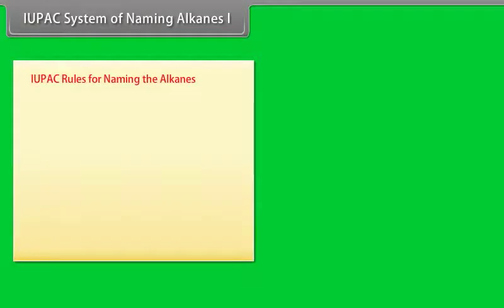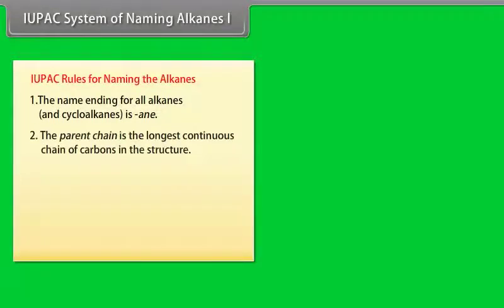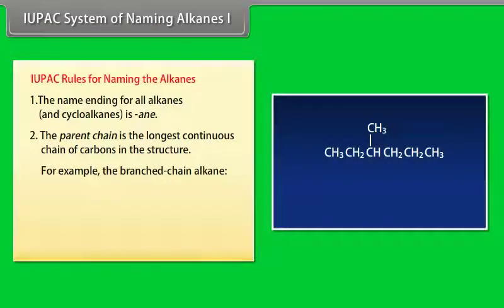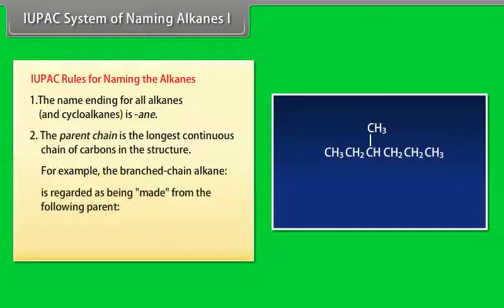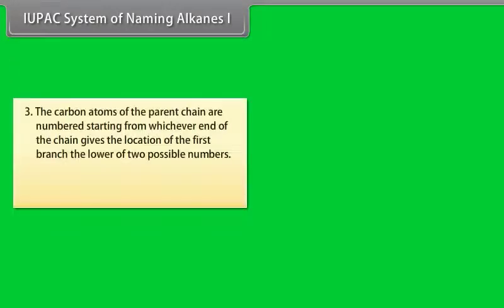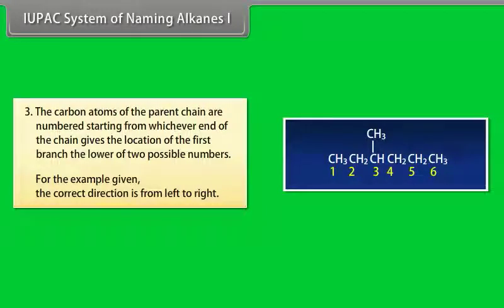IUPAC rules for naming the alkanes: Number 1, the name ending for all alkanes and cycloalkanes is -ane. Number 2, the parent chain is the longest continuous chain of carbons in the structure. For example, the branched chain alkane is regarded as being made from the parent CH3CH2CH2CH2CH2CH2CH3 by replacing an H on the third C from left with CH3. Number 3, the carbon atoms of the parent chain are numbered starting from whichever end of the chain gives the location of the first branch the lower of two possible numbers.